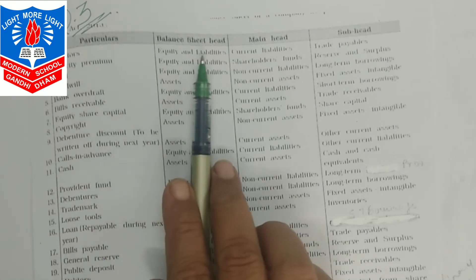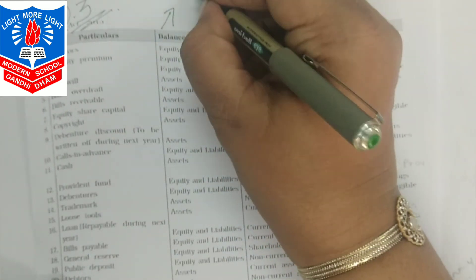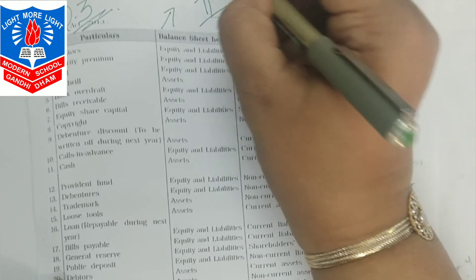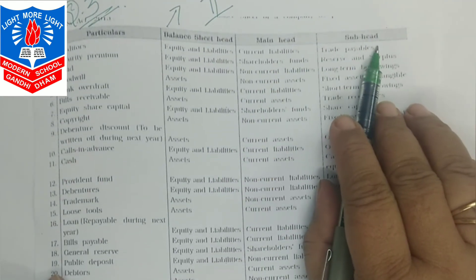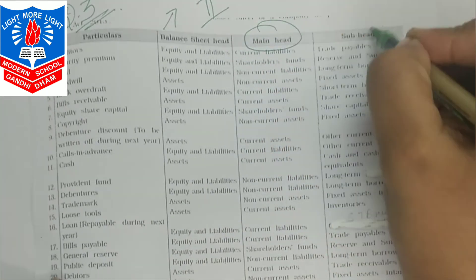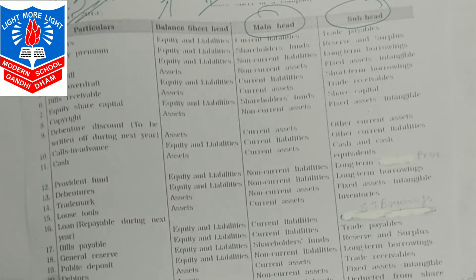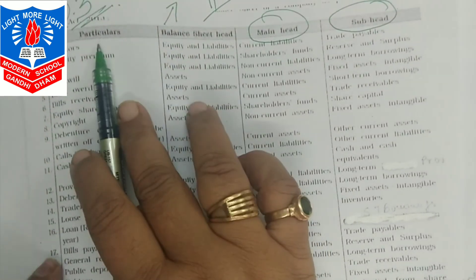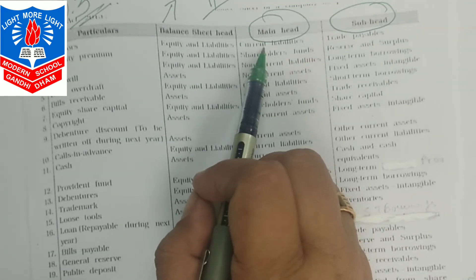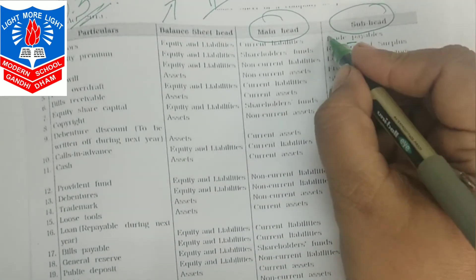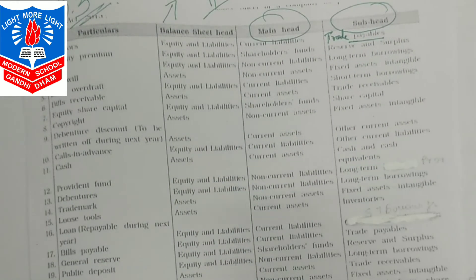The classification table has four columns: particulars, balance sheet head, main head, and sub-head. First item: creditors. Creditors are a liability — equity and liabilities side — current in nature — current liability — sub-head is trade payables. Second item: securities premium — equity and liabilities — shareholders' fund — sub-head is reserves and surpluses.